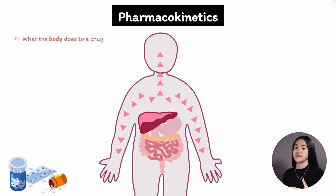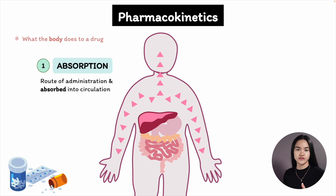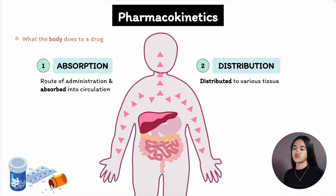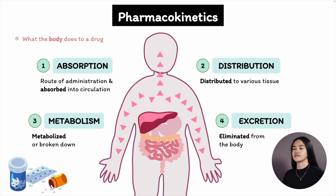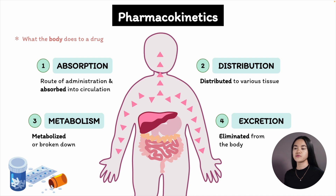First, a drug requires a route of administration, then it must be absorbed into the circulation and distributed to various tissues of the body, where it's metabolized or broken down, and finally eliminated from the body. We can break this whole process into four main components: absorption, distribution, metabolism, and excretion — the acronym is ADME.